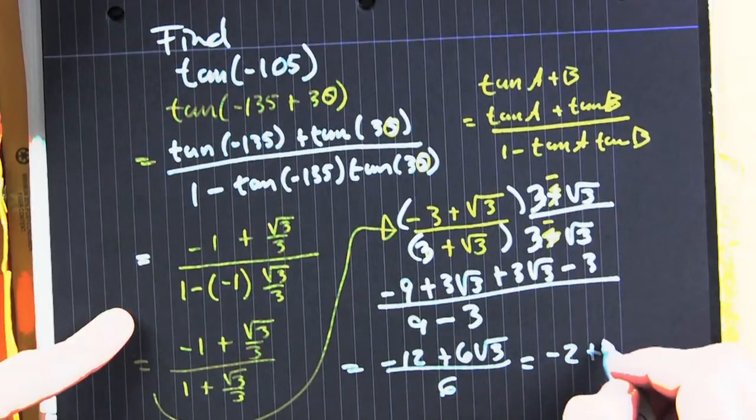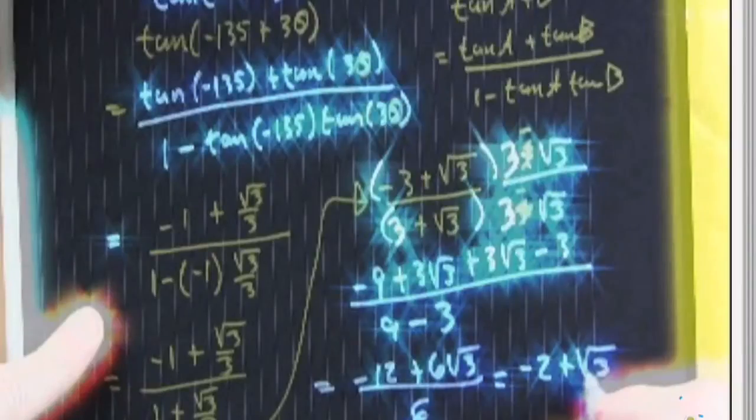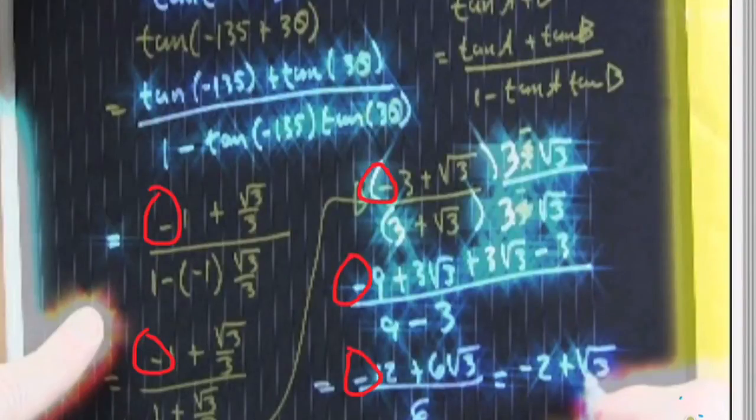Now I need to say something. So you need to be really careful with your signs. This guy right here. The tangent of minus 135, that's not a minus 1. That's a positive 1. So that's going to change this sign, and this sign, and this sign, which changes this sign, which changes this sign.